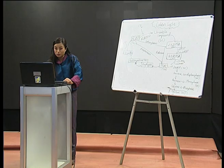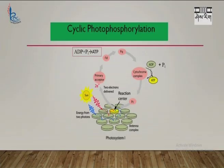Now let us move on to cyclic photophosphorylation. It is called cyclic because the electrons lost come back to the reaction center. In non-cyclic, the electrons lost from P680 do not come back to its reaction center. In cyclic photophosphorylation, when the reaction center gets activated by capturing photons, a pair of electrons are released from the reaction center. They are accepted by the primary electron acceptor, then transferred to ferredoxin, plastoquinone, cytochrome complex, and then plastocyanin, and then they come back to the reaction center P700.